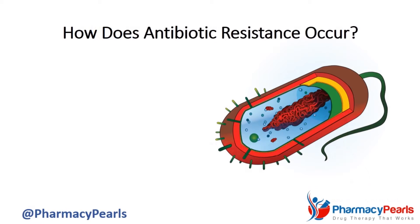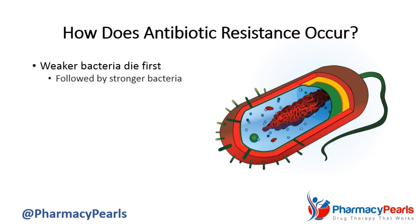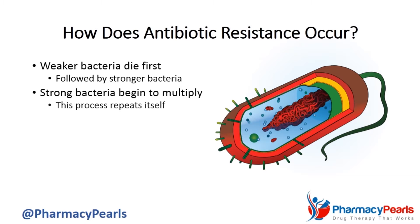First of all, let's review the basic process by which antibiotic resistance occurs. When bacteria first come in contact with an antibiotic, the weaker bacteria die first, followed by the stronger bacteria. If strong bacteria are left behind, they can begin to multiply, producing more and more strong bacteria. Over time, this process repeats itself and a ratcheting effect occurs, until we are left with bacteria so strong that they are now resistant to the antibiotic.